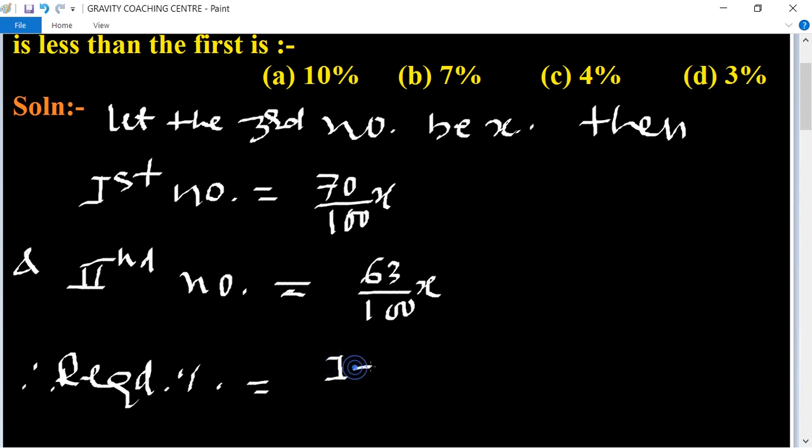First number minus second number upon first number, multiplied by 100 percent.